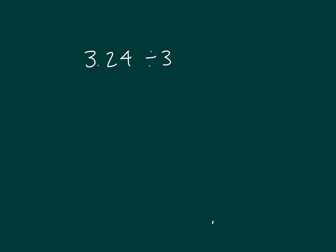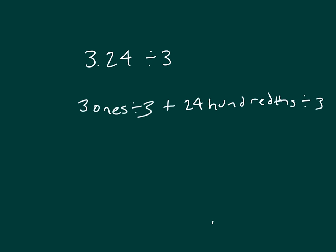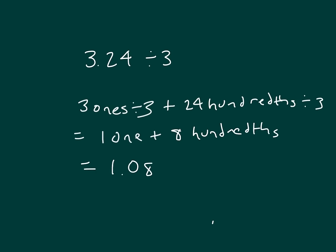Let's try another one: 3.24 divided by 3. I can go for the ones — 3 ones divided by 3. The hundredths is 24 hundredths, so let's use that. 3 ones divided by 3 is just 1 one, and that goes along with 24 hundredths divided by 3, which equals 8 hundredths. I can write that out in standard form. Read our whole equation: 3.24, or 3 and 24 hundredths, divided by 3 equals 1 and 8 hundredths.